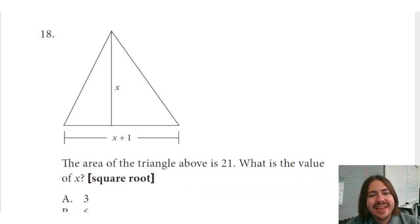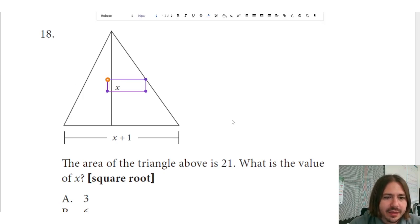Hey y'all, welcome back. Number 18 says the area of this triangle is 21, what is the value of x? You can see this diagram gives you both the height and the base length here. This is the height, and the height is just equal to x. The base here, which is the distance from here to here, is going to be x plus 1.